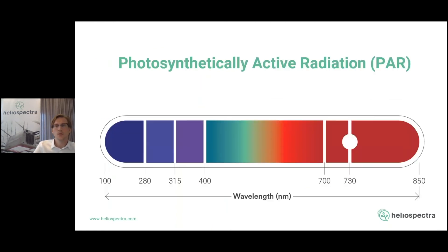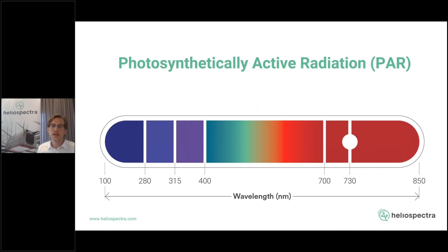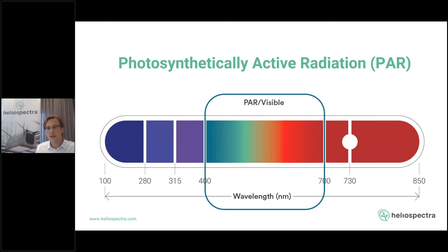Let's talk about PAR. Many of you may already be familiar with this concept. PAR stands for photosynthetically active radiation — it is essentially the type of radiation that stimulates photosynthesis, utilized by plants in photosynthesis. The PAR region is defined as all photons with wavelengths between 400 and 700 nanometers. This overlaps almost perfectly with the visible spectrum — what humans can see — so it covers blue, green, and red light.